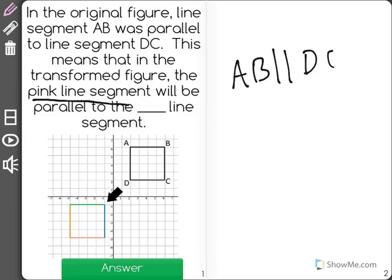So here we have AB is parallel to DC. As you can see, they keep going on forever and they'll never cross.